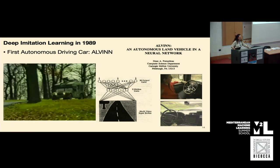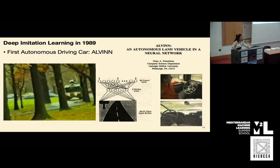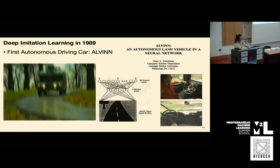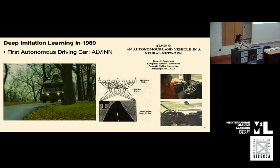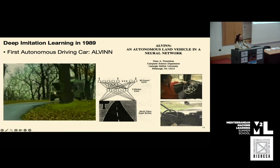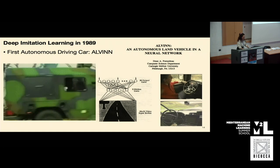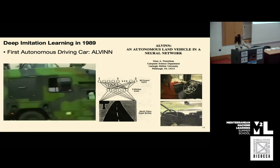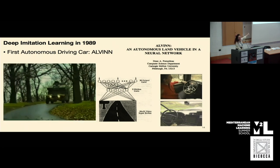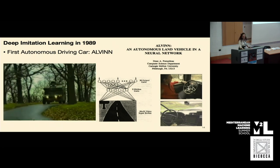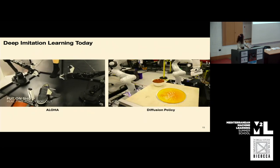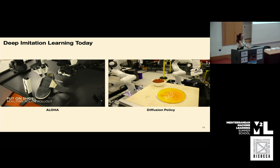It's interesting that we were doing deep imitation learning already in 1989 with the first autonomous driving car, ALVINN, created at CMU. It used retina images from video passed through a shallow neural network. The video shown is several times accelerated — it was not able to go that fast. But we have made progress since then.